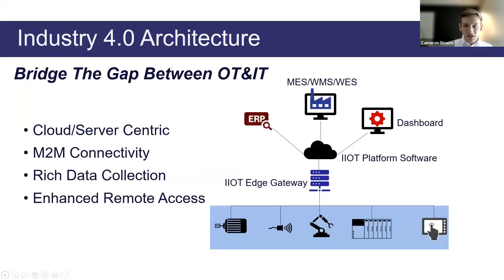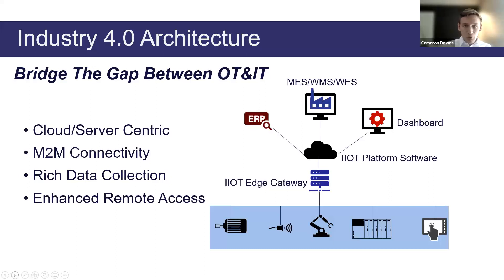The second component of Industry 4.0 architecture is the software — the software that collects the data, makes use of all the data you're pushing out, and allows you to push it to a dashboard or exchange information with a manufacturing execution system, warehouse management system, or warehouse execution system. For example, a smart video doorbell at home is relatively simple, but because of powerful software running in the cloud, it can send video of what passes by my house and determine if it was a car, a dog, or a human, and alert me. This is all because of Industry 4.0 and the Internet of Things.